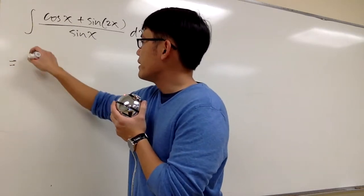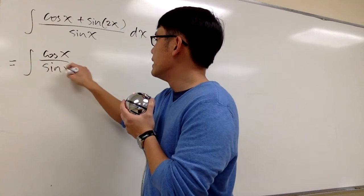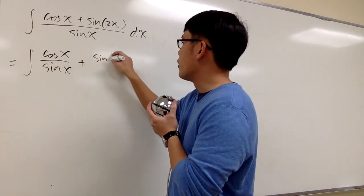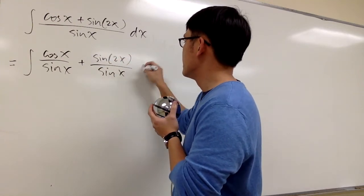We're going to get the integral of cosine x over sine x, and then the second part will be plus sine of 2x over sine x, dx.